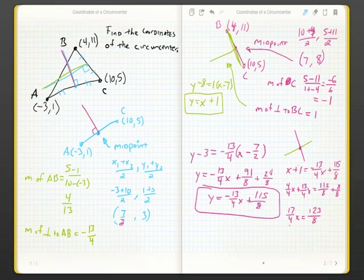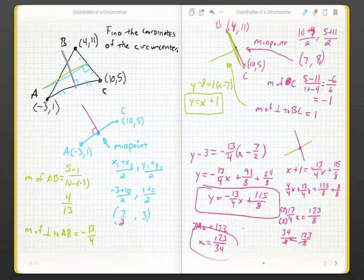And then, here, I get 17 over 4x equals 123 over 8. To save some time, I multiply the denominator and numerator by 2. So, then, if I have 8 on the bottom, they both cancel out. So, I get 34x equals 123. So, x is going to equal 123 over 34.